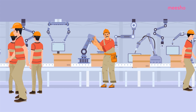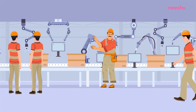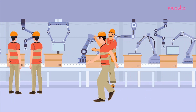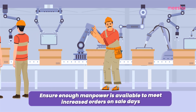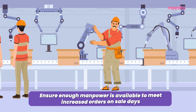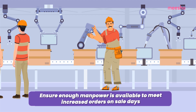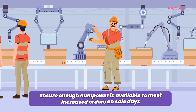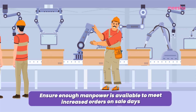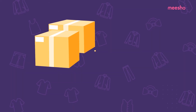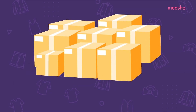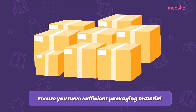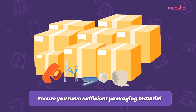Orders might go up by two to three times on sale days. To meet the increased requirement, ensure sufficient manpower is available for packing, labeling, and other operational tasks. This helps avoid delays or breaches in dispatch times. Also ensure that you have enough packaging material like tape, labels, and boxes.